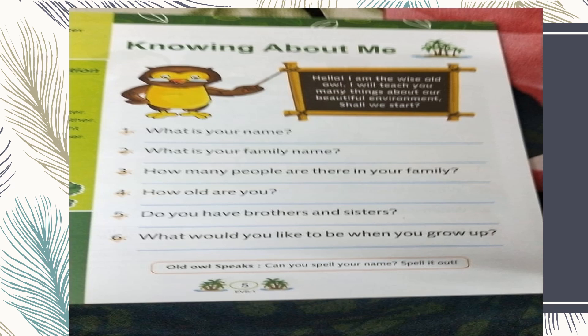So how many people are there in your family? You have to write the number of members living in your family — your parents, yourself, and your siblings. For example, there are four members in my family. Moving on to the next question: how old are you? If someone asks this, they want to know your age. Are you four years old, five years old, six years old?